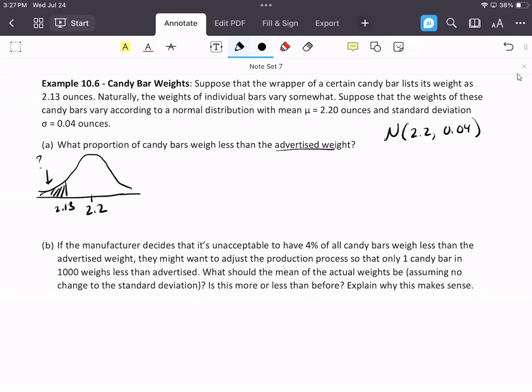And see if you can come up with the probability that, or the proportion, I should say, in this case, of that weigh less than the advertised weight. So please check your answer. We get that the probability that it's very low. It's less than 4% of candy bars weigh less than the advertised amount. So what proportion? It's about 4% that weigh less than the advertised amount.